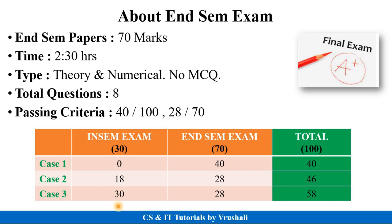In the third case, suppose you got 30 out of 30 marks in your in-sem exam. Still, you need to score 28 marks out of 70 in your end-sem exam, making your total score 58 out of 100. So the two passing criteria are 40 out of 100 and 28 out of 70. Prepare accordingly.